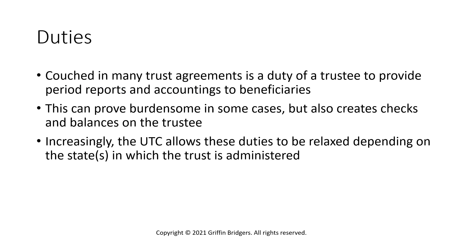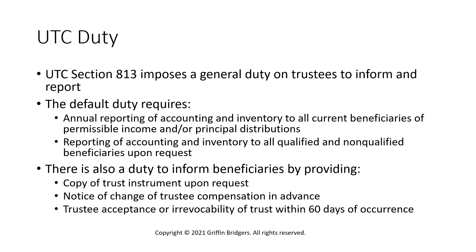The Uniform Trust Code, which varies by state, does allow these duties to be relaxed depending on which state governs the administration of the trust. The basic duty is found in UTC Section 813. There's a default annual reporting requirement at the very least to income beneficiaries or those who currently can receive principal — they must get an annual report of accounting and inventory. Similarly, any other beneficiary who requests it, even if not a qualified beneficiary, must receive a copy of this accounting and inventory. There's also a duty to provide information such as a copy of the trust instrument, notice of a change of trustee, or trustee acceptance or irrevocability of the trust — those are more situation-based and request-based.